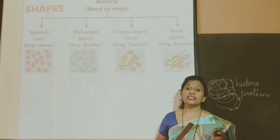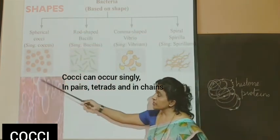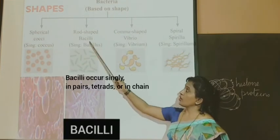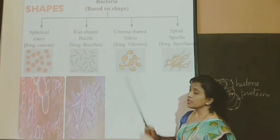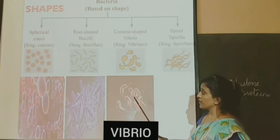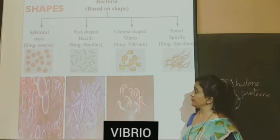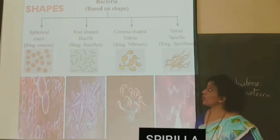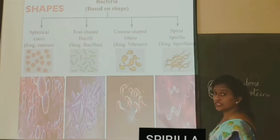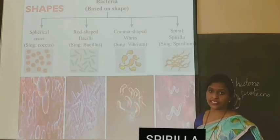They have various kinds of shapes. The shapes are: spherical or oval — also called as cocci. Second is rod-shaped structure, also called as bacilli. Third is comma-shaped, also called as vibrio — these are always single in nature and not aggregated together. Then the spiral ones are called as spirilla — they have a spiral-shaped structure, and like vibrio, they also do not aggregate together.